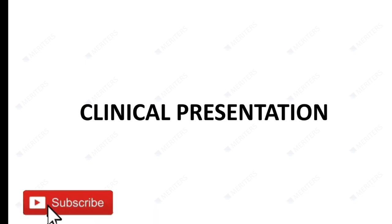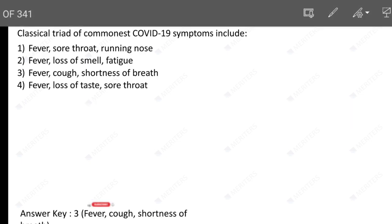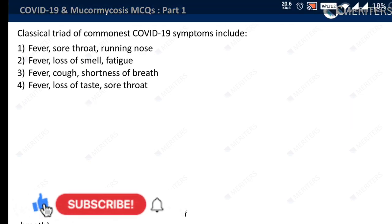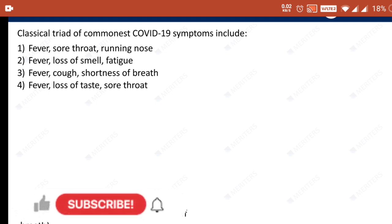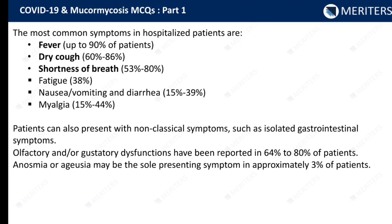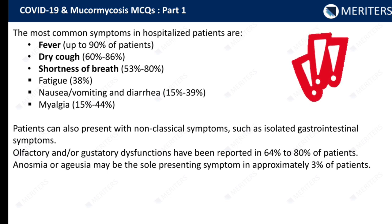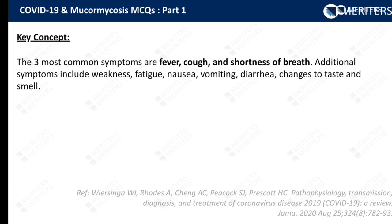Now let's start the video. The classical triad of the commonest COVID-19 symptoms — the options are fever/sore throat/running nose, fever/loss of smell/fatigue, fever/cough/shortness of breath, or fever/loss of taste or sore throat. It is quite confusing, but the correct answer is fever, cough, and shortness of breath. The most common symptoms in hospitalized patients are fever in up to 90% of patients, dry cough in 60–86%, and shortness of breath in 53–80% of patients. That is why these three are the most common symptoms for COVID-19.